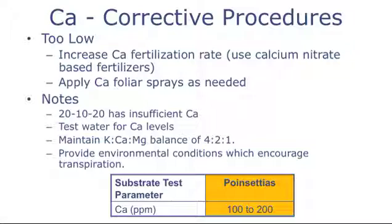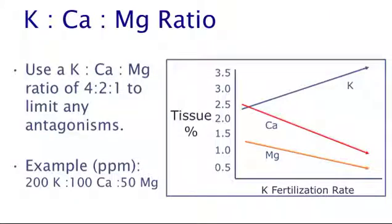Please keep in mind that 20-10-20 does not contain sufficient levels of calcium to support poinsettia growth. One needs to determine the amount of calcium supplied via the irrigation water, and if that's too low, utilize a fertilizer which contains high enough levels of calcium. Also try to maintain environmental conditions within the greenhouse which encourage good water uptake by the plant. If conducting substrate tests, the target for calcium should be between 100 and 200 parts per million. Be aware that potassium, calcium, and magnesium should be maintained at a 4-2-to-1 ratio. If the level of one of these elements is too great, it can have an antagonistic effect on the other two elements.